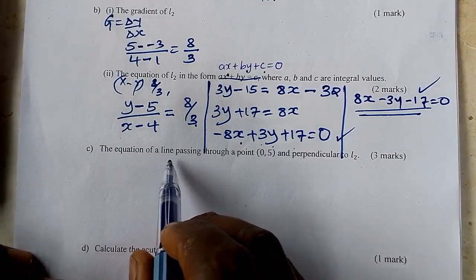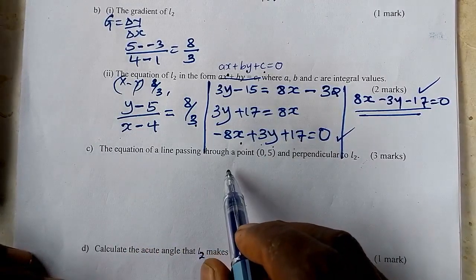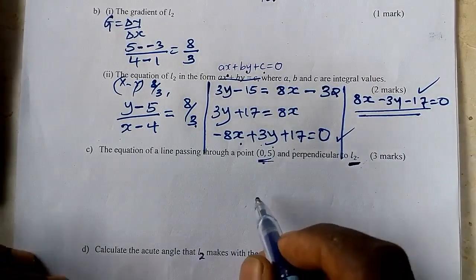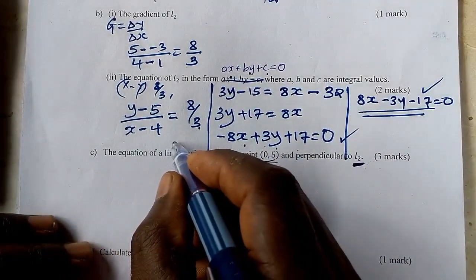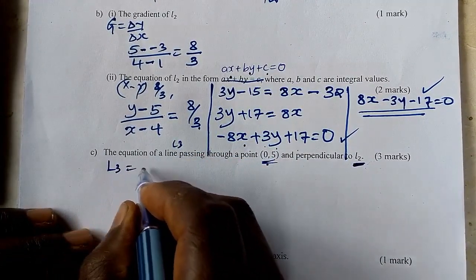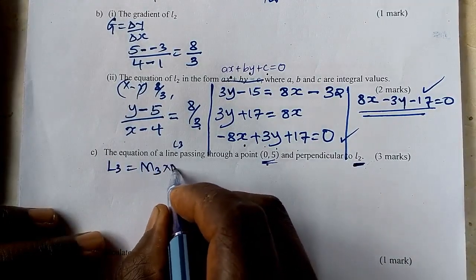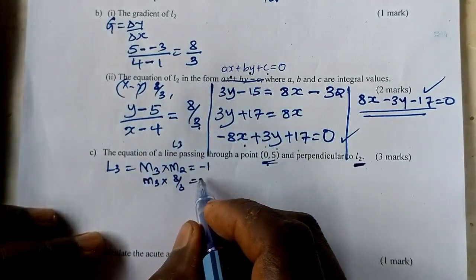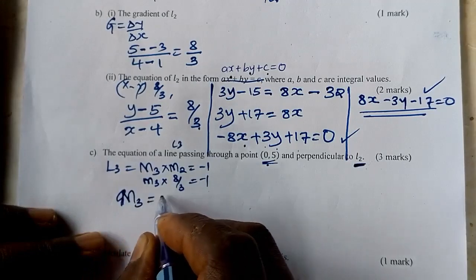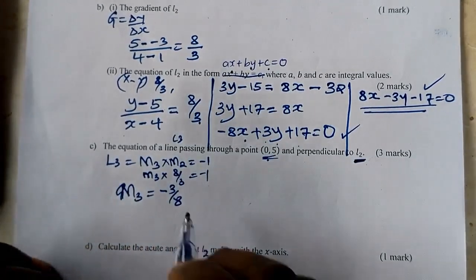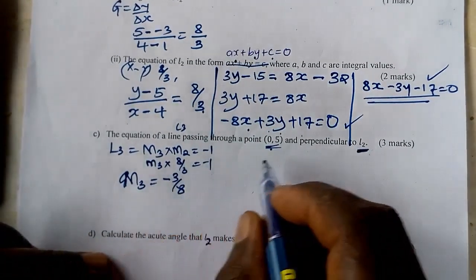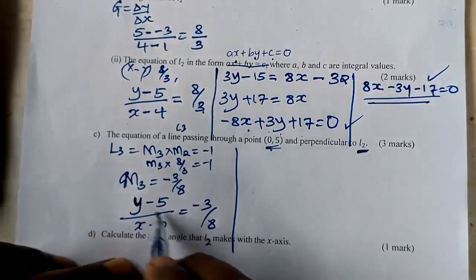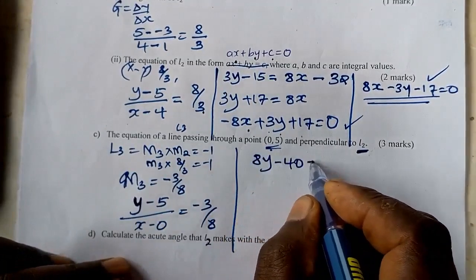Now find the equation of a line passing through a given point and perpendicular to L2. Call it L3. For perpendicular lines: M3 times M2 equals negative 1. Since M2 equals 8 over 3, we have M3 times 8 over 3 equals negative 1, so M3 equals negative 3 over 8 — the negative reciprocal. Now, L3 passes through (0, 5). So: y minus 5 over x minus 0 equals negative 3 over 8. Cross-multiplying: 8y minus 40 equals negative 3x.